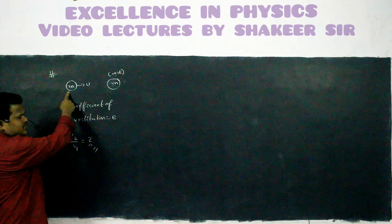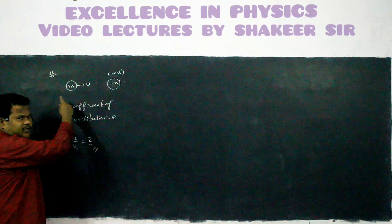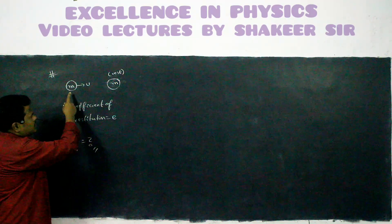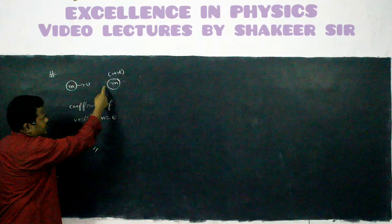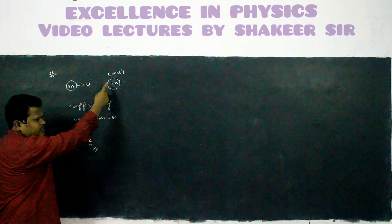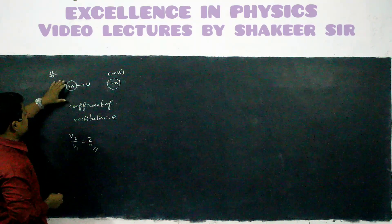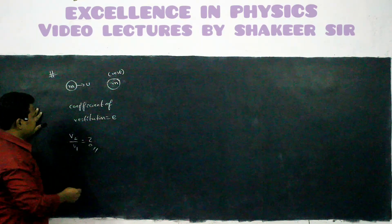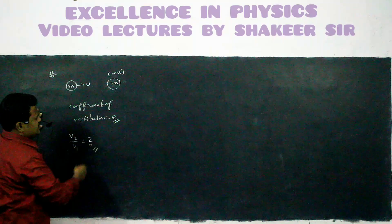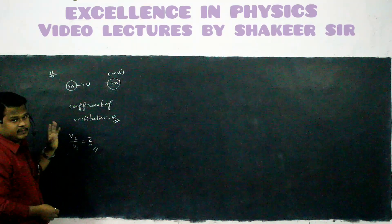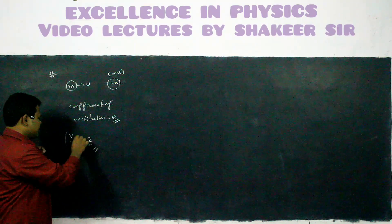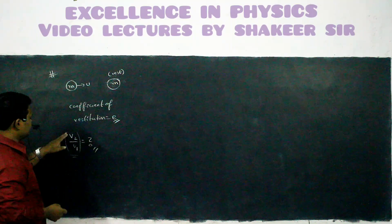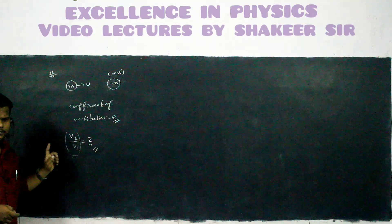This is a body of mass M here. Initial velocity is U. It is striking with a ball of another similar mass, which is in rest position. Mass of this one is also M, mass of this one is also M. The coefficient of restitution is given as E. Then we are supposed to find out this ratio, V2 by V1 — final velocity of second ball divided by final velocity of first ball.